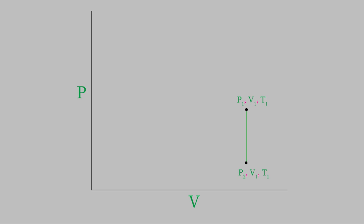Suppose we measure the change in the Helmholtz energy during this process and find out that it has a certain value, delta A. Now suppose we perform another process, starting at those same initial conditions. However, this time we don't hold V and T constant during our process. Instead, the pressure, volume, and temperature might all change several times. In fact, this might not even represent just one chemical reaction — this time we might be performing two, three, or twenty different reactions.